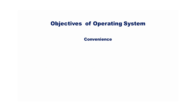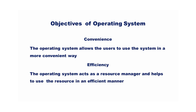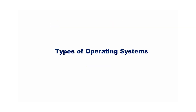The operating system has two main objectives: convenience and efficiency. The operating system allows the user to use the system in a more convenient way. The operating system also acts as a resource manager and helps to use the resources in an efficient manner.